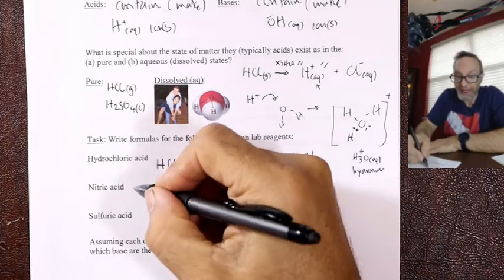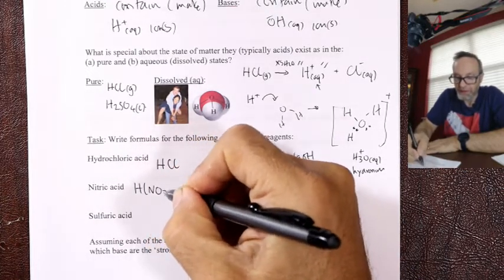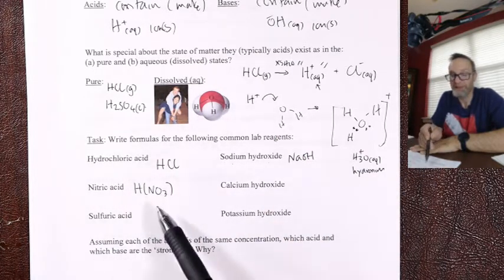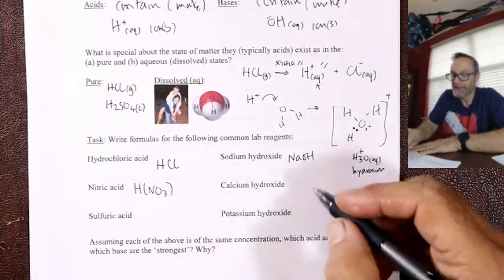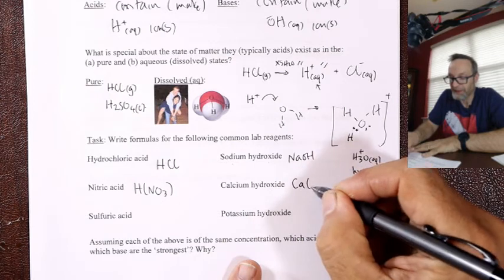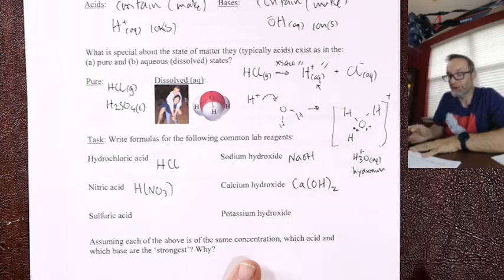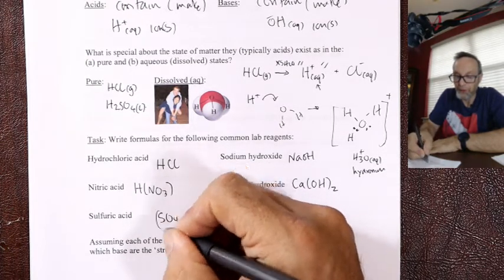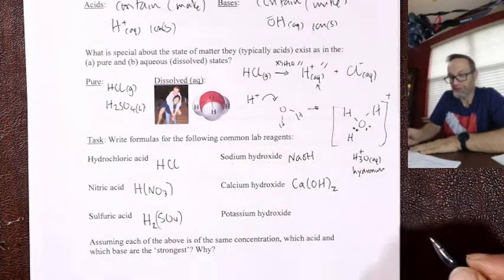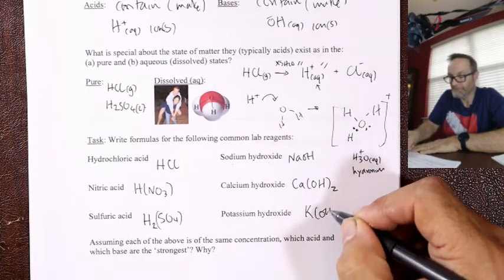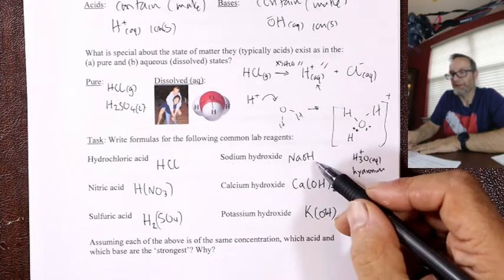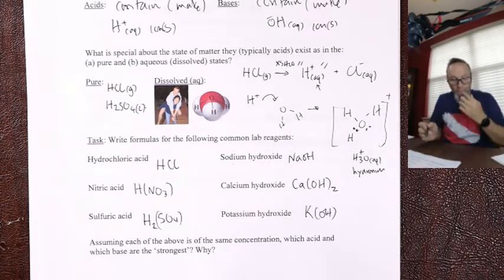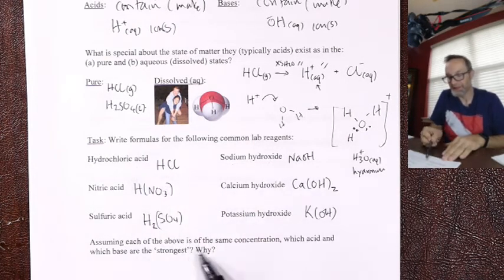Nitric acid: H⁺ plus NO₃⁻, +1 and −1, giving HNO₃ — if it's one molecular ion you can drop brackets. Calcium hydroxide: be careful, +2 and −1, so you need two OH⁻, giving Ca(OH)₂. Sulfuric acid: SO₄²⁻ needs two H⁺ giving H₂SO₄. Potassium hydroxide: +1 and −1, giving KOH, written with or without brackets.